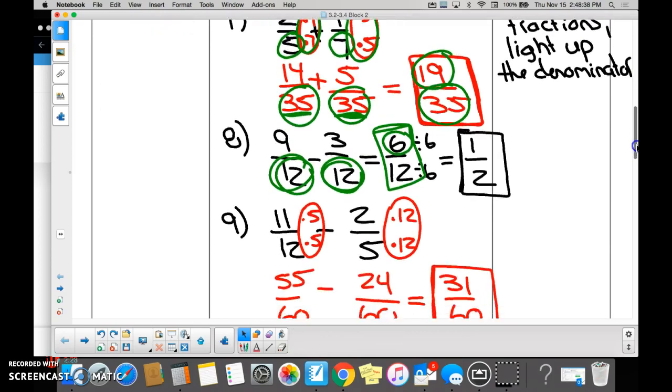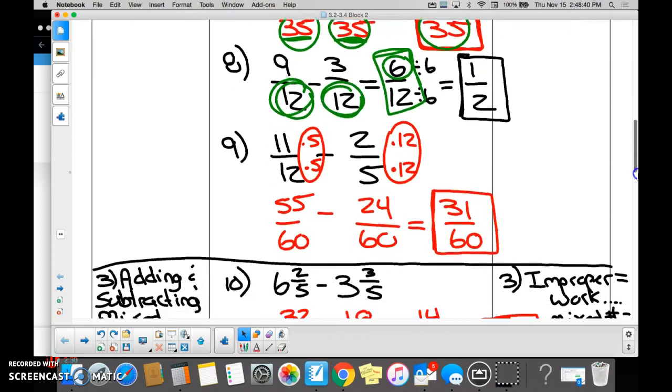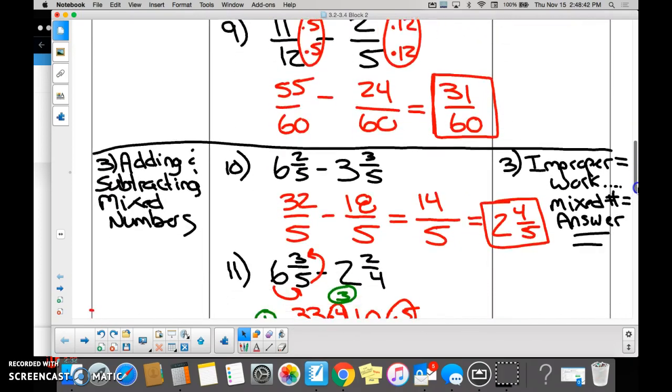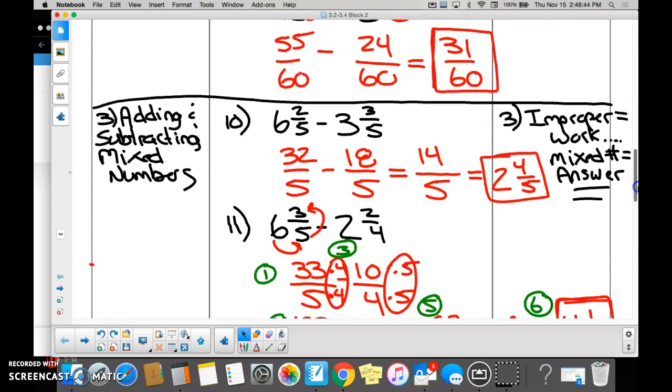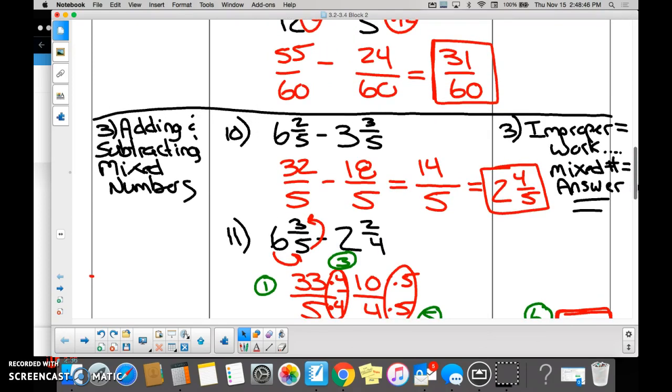Number nine is another example of finding common denominators. So here's where things get a little bit trickier and longer. We have mixed numbers. Is it okay to calculate with mixed numbers? You can't calculate with mixed numbers. You must convert them into what? Improper fractions. So once we went around the world on both of them and converted...